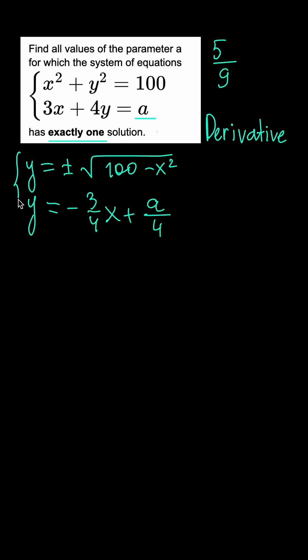And if we want the system of equations to have a single solution, the line given by the second equation should be tangent to the graph of this function, which means that the value of the derivative at their common point should be equal to the gradient of the line.